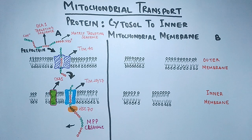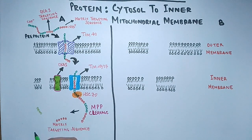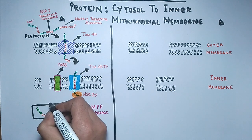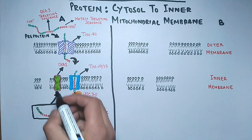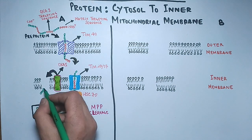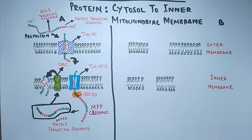MPP cleavage is a process where the matrix targeting sequences are removed from the protein, and the rest of the protein is left with only the OXA targeting sequence. After this, the OXA targeting sequence on the protein is recognized by OXA1 protein in the inner membrane of mitochondria, which then inserts the protein into the inner mitochondrial membrane, as shown in the diagram. This is how OXA1 protein transports proteins with OXA targeting sequences into the inner mitochondrial membrane.